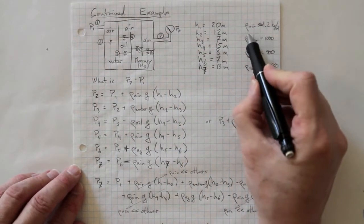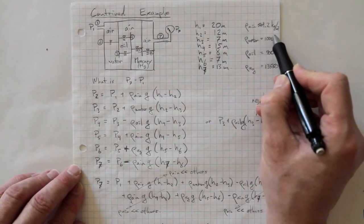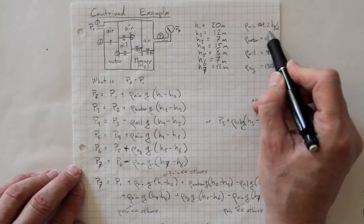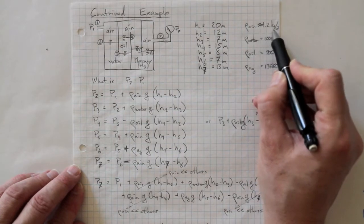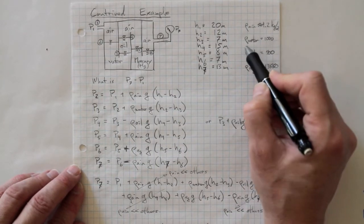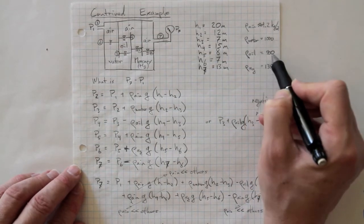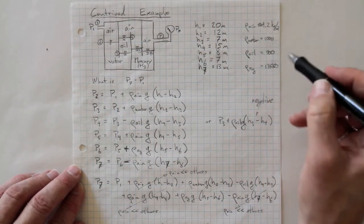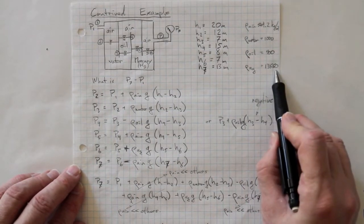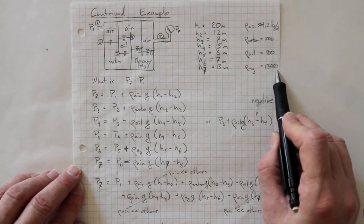Our first observation is that air at any reasonable pressure near atmospheric has a density of about 1.2 kilograms per cubic meter. Water, on the other hand, is about 1000. The oil in this case is 900 kilograms per cubic meter, and the density of mercury is about 13,550 kilograms per cubic meter — so much heavier.